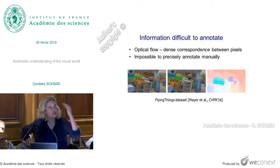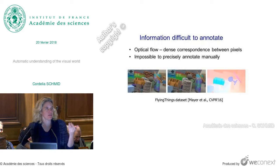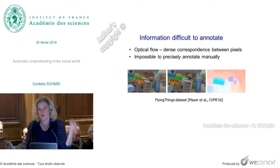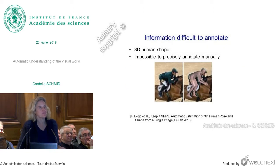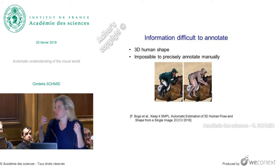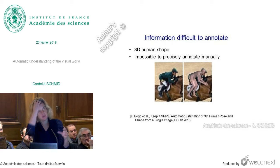Another reason to go away from manual annotations is that there are many things for which you simply cannot get them. For optical flow, you just cannot annotate it manually — you cannot click on each pixel and say what the optical flow is. A more convincing example is human 3D shape. If you want to reconstruct human 3D shape, you cannot do this manually. So you have to have something which creates the data automatically, either by inferring it with weak supervision or by using synthetic data.